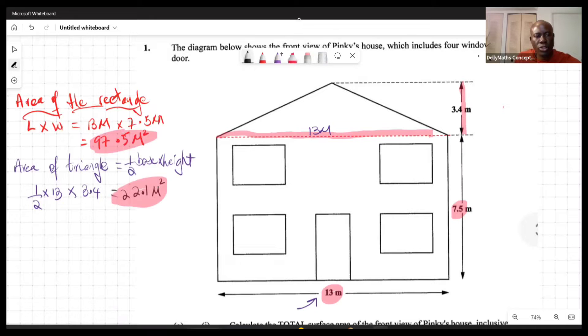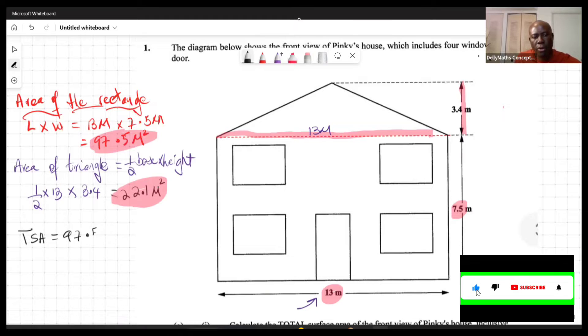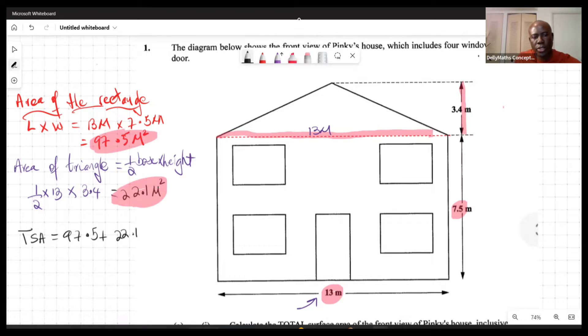So we could highlight the fact that this is the area of the rectangle, this is the area of the triangular part. So now the total surface area is going to equal to the 97.5 plus 22.1, and we're looking at 119.6 meters square. That represents the front view, the area of the front view, including the windows and the doors.